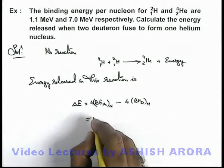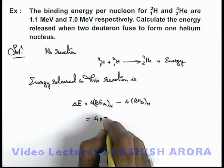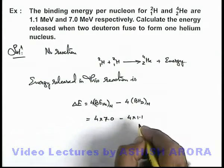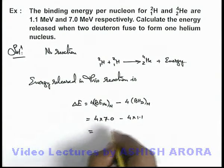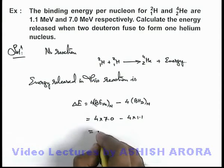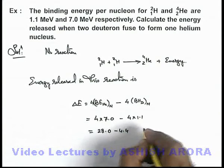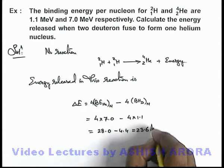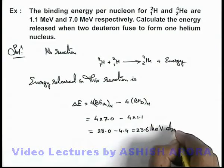So when we substitute the values, this will be 4 multiplied by 7.0 minus 4 multiplied by 1.1. On simplifying, we'll get 28.0 minus 4.4. The result will be 23.6 million electron volts. That'll be the answer to this problem.